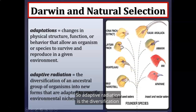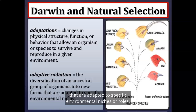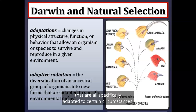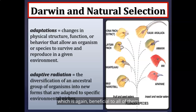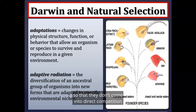Adaptive radiation is the diversification of an ancestral group of organisms into new forms adapted to specific environmental niches or roles. In the island environment, we see dozens of different species of finches specifically adapted to certain circumstances, which is beneficial to all of them so they don't come into direct competition with one another.